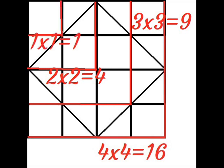2 square is now added with 1 as shown here. It represents n minus 2 the whole square plus 1.